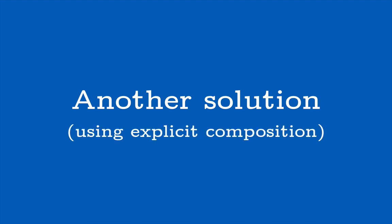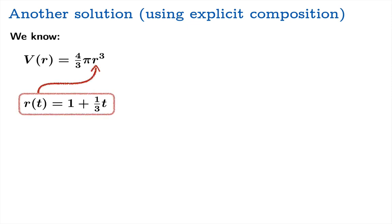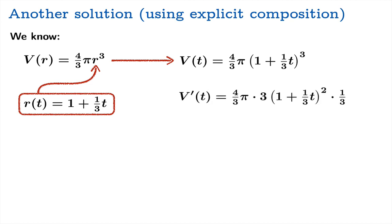So now we're going to go back to the beginning and solve these both using explicit composition. So what do we mean by that? So we know that v is a function of r, is four-thirds pi r cubed. We know r is a function of t, is one plus one-third t. What if we just substitute in this formula for r right into this formula for v? Well, we're going to have an explicit formula for volume as a function of time.